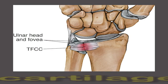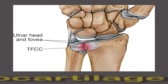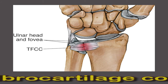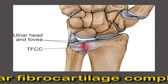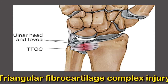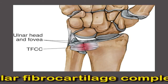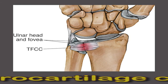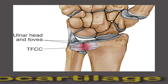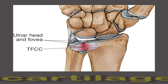The triangular fibrocartilage complex is located on the pinky side of the wrist. It acts as a cushion and support for the small bones. The cartilage can wear away over time or tear due to an injury.